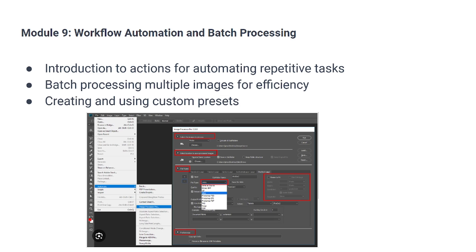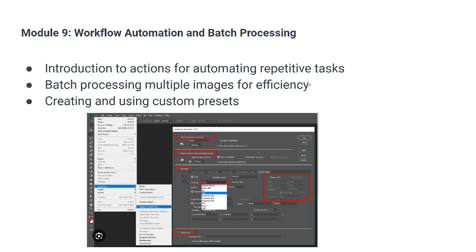This brings us to introducing you to actions for automating repetitive tasks, batch processing of multiple images for efficiency, and creating and using custom presets. We are focusing on introducing actions in such a way that it becomes an automated procedure — you set it once and it runs throughout your workflow. It can process 1000, 500, or 100 images; the speed depends on your laptop, desktop, or iPad. Without further delay, let's head into Photoshop and tackle batch editing and export.